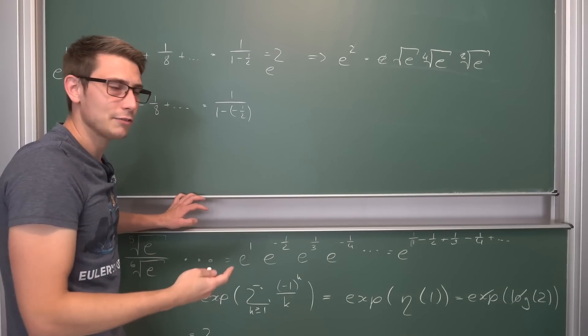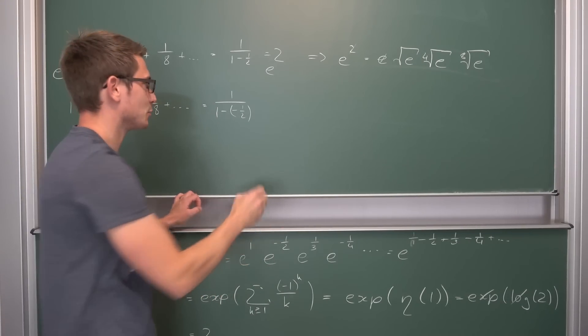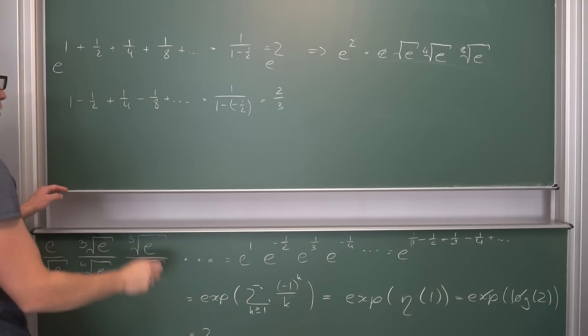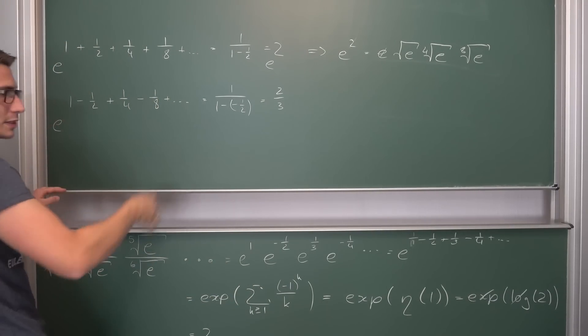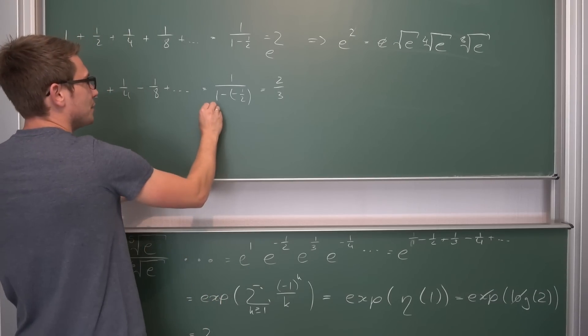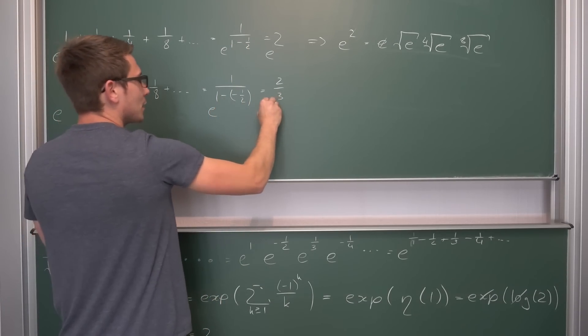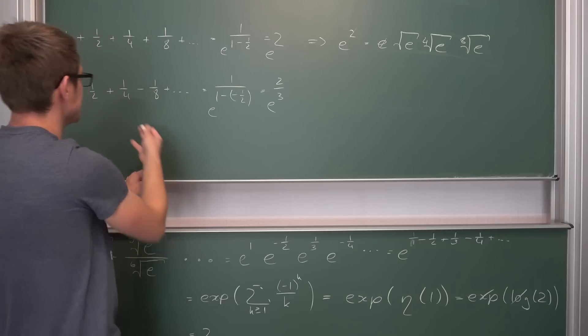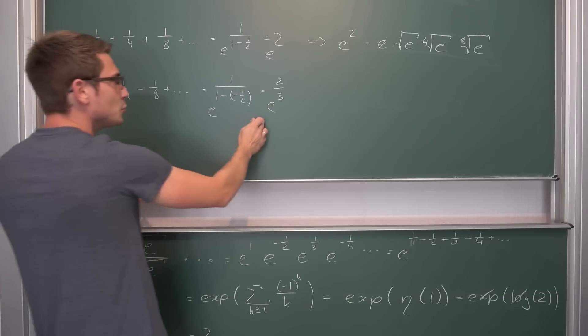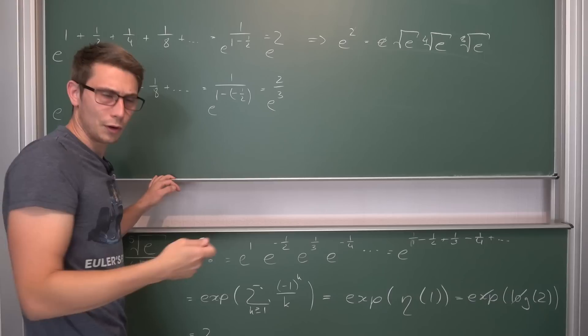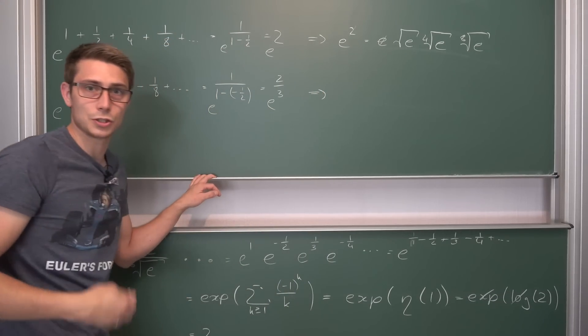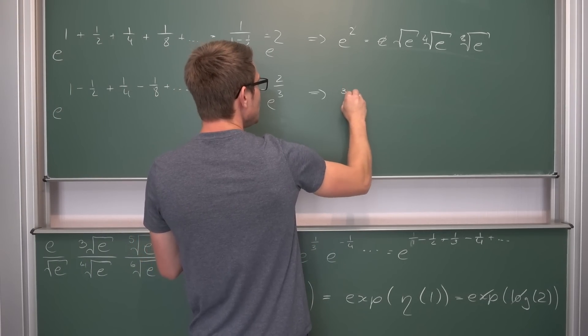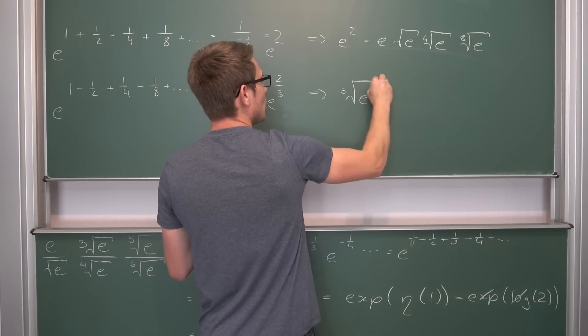I also want to try this out with negative values. If you were to take a look at negative one-half instead of one-half, what is the alternating series? You're going to get one minus one-half plus one-quarter minus one-eighth and so on. This is going to give us one divided by one minus negative one-half. One plus one-half is three over two, taking the reciprocal, this is two over three.